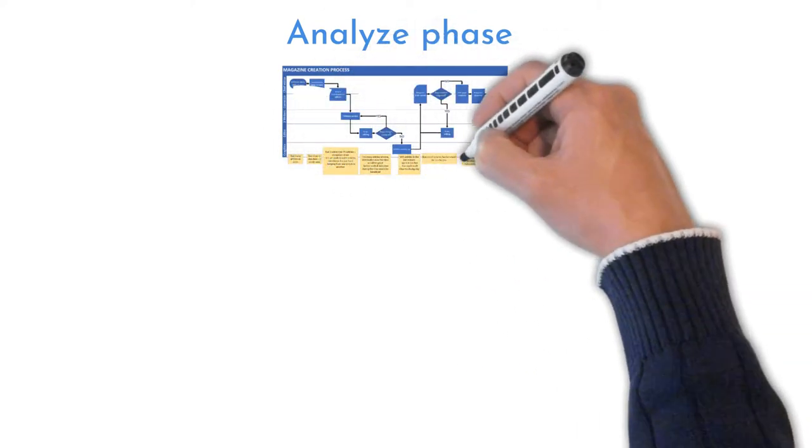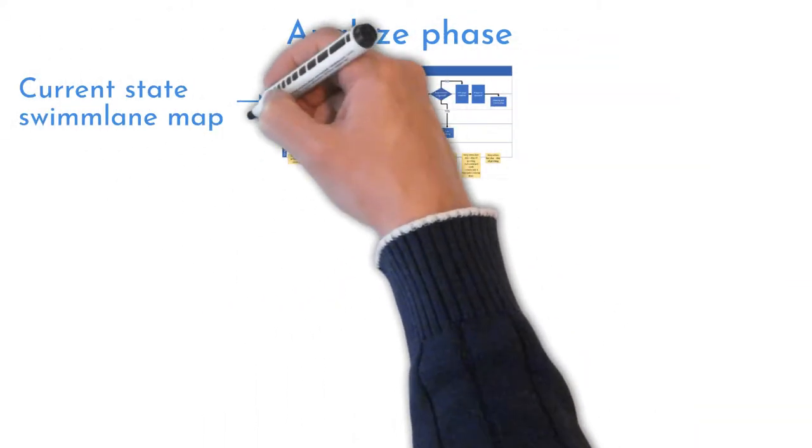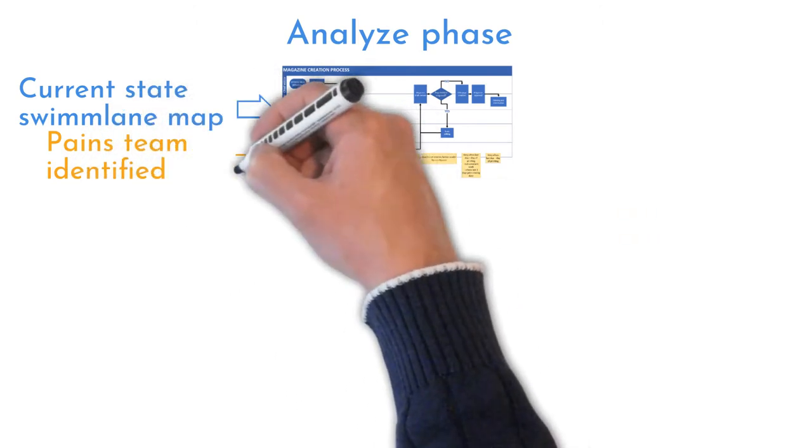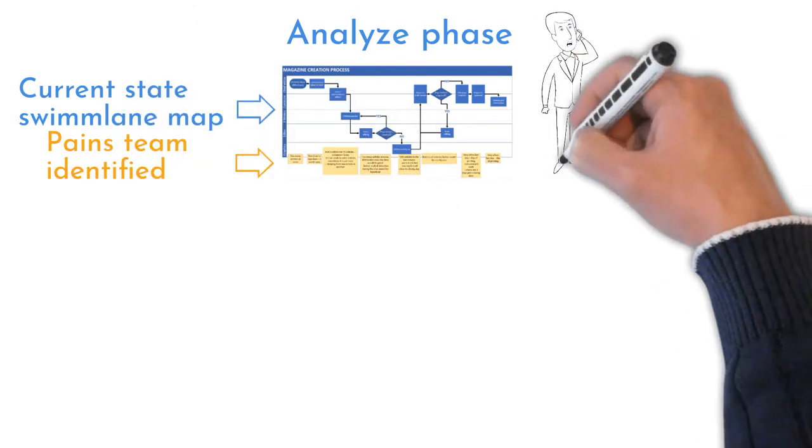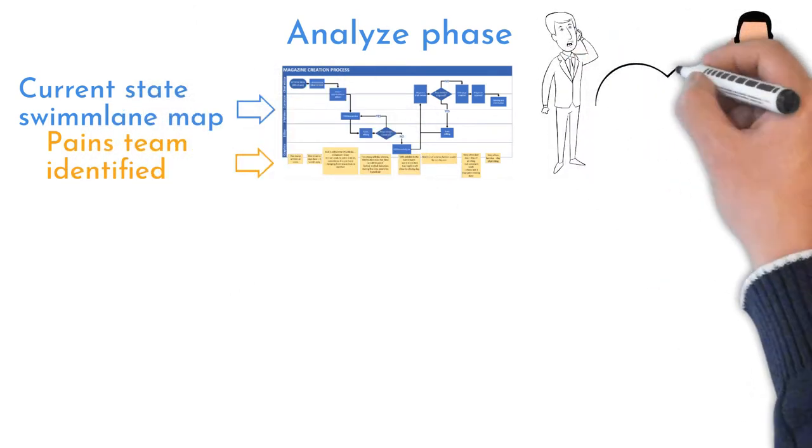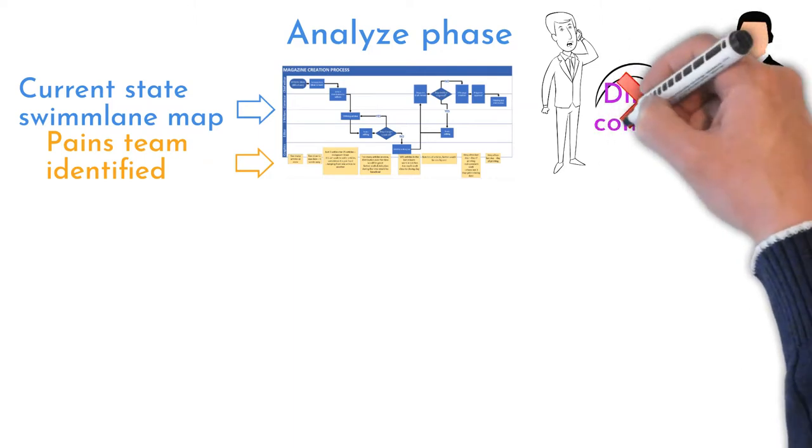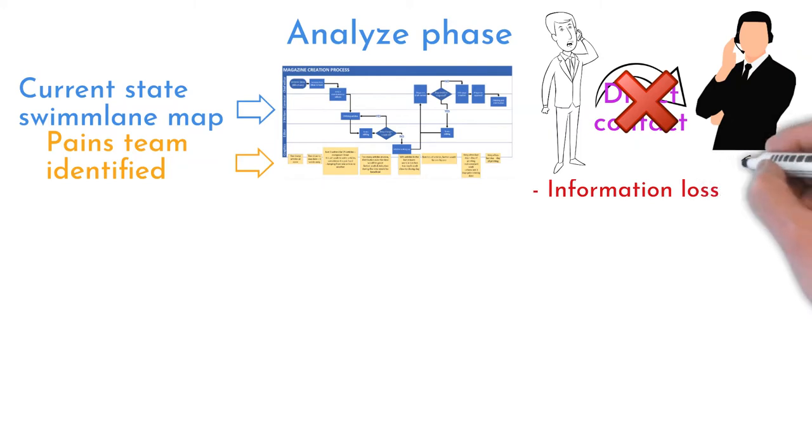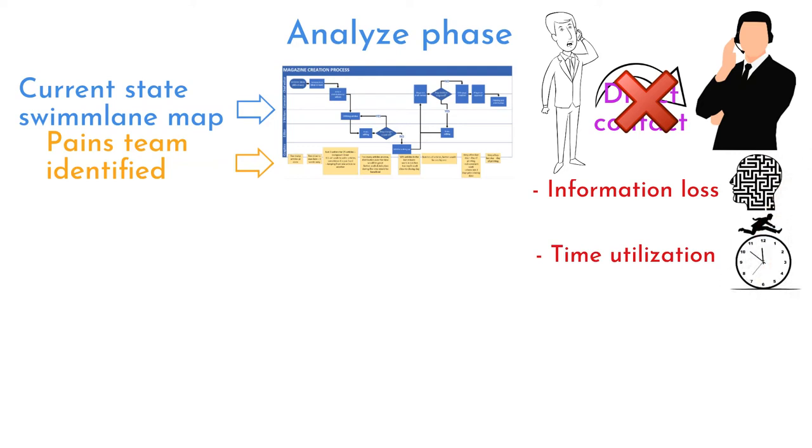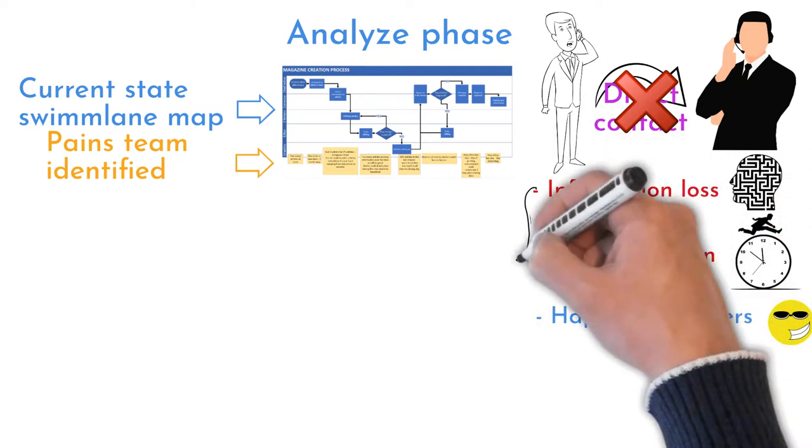Existing process review by using process map explored team members' different approaches for resolving problems. Some customers use direct calls to particular help desk persons. The official way to contact the support team is by using online ticket requests. Information about addressed issues are lost by bypassing the official way. Help desk persons are utilizing their time on not monitored activities. However, customers are happier because response to their problem is immediate.